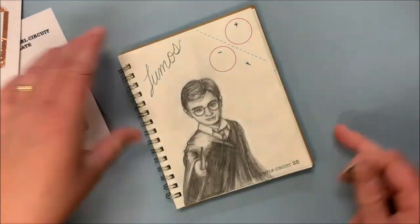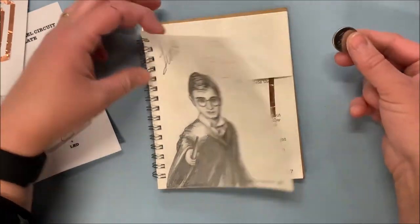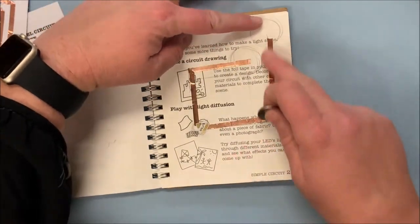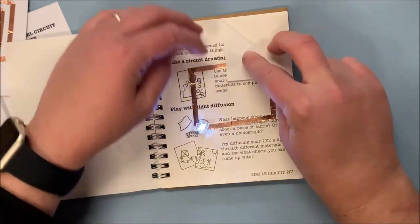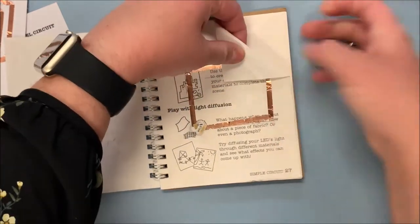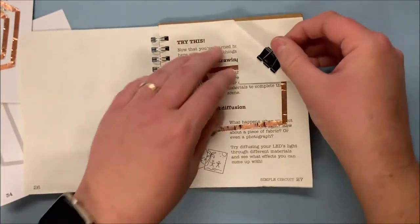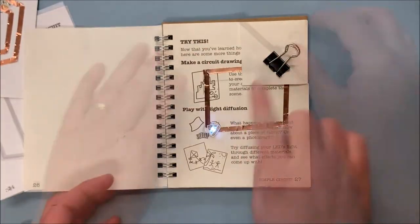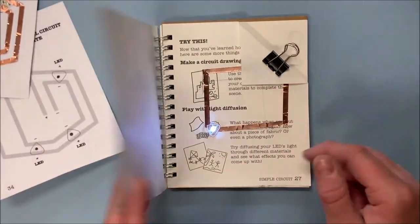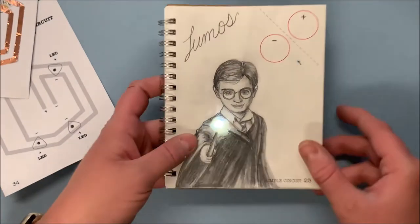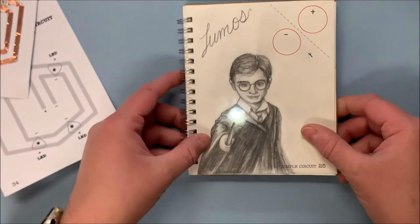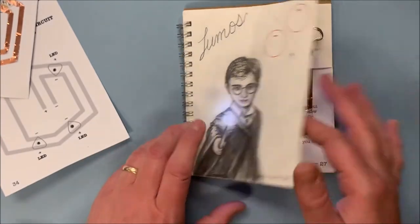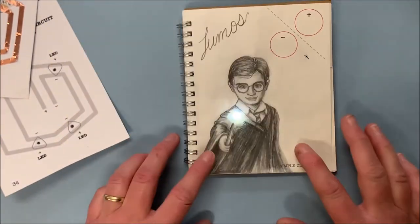I've done this with a drawing of Harry Potter here. I take this circuit I've created with my LED light, put my coin cell battery in, fold it over and clip it. Now that I have it clipped, I can fold it over, put my drawing on, and there we go - Lumos! We have Harry Potter's wand glowing. This is a one light simple circuit.